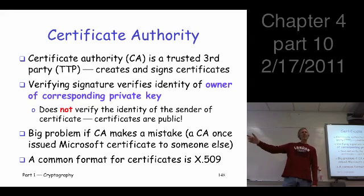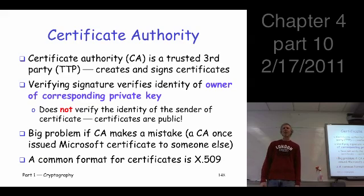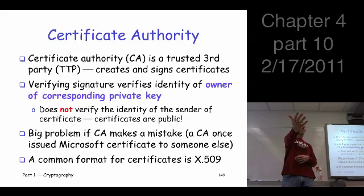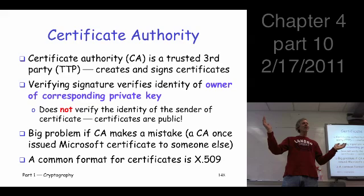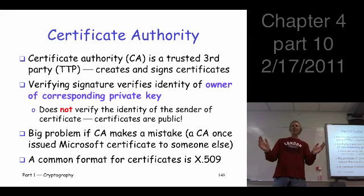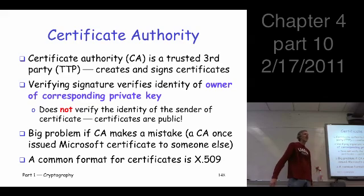So anybody can have the certificate. Trudy can have Alice's certificate. Trudy can have Bob's certificate. Trudy can have everybody in the world's certificate because they're public information. Trudy can send Alice's certificate to you and say, hey, I'm Alice, you know, you know, encrypt your secret messages and send them to me.